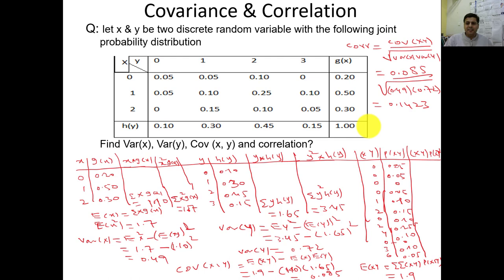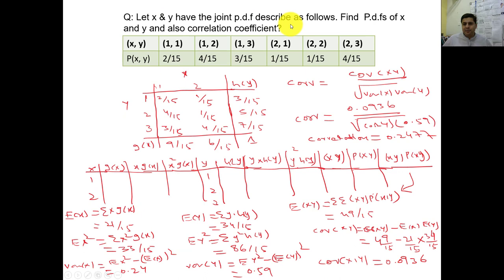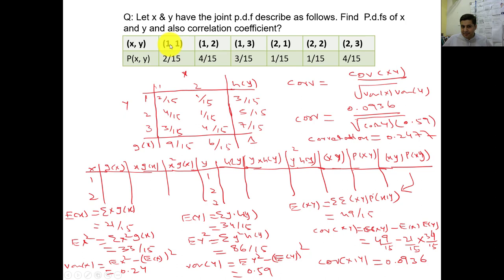Extending to another question: let x and y have a joint probability distribution as follows — find the probability distribution function of x and y and also the correlation coefficient. In this data, x takes values 1 and 2, while y takes values 1, 2, and 3. The joint probabilities are: P(1,1)=2/15, P(1,2)=4/15, P(1,3)=3/15, P(2,1)=1/15, P(2,2)=1/15, P(2,3)=4/15.